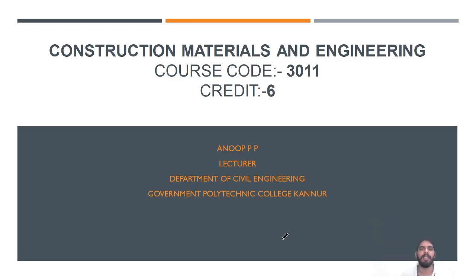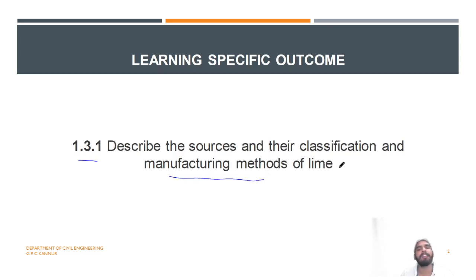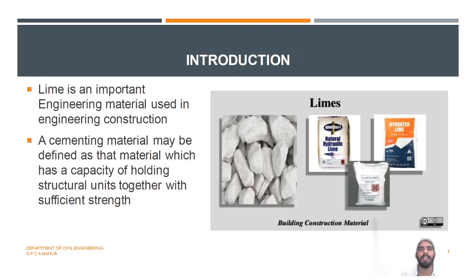Hi students, welcome to the new class on Construction Materials and Engineering. Today we will discuss about a new topic called lime. As per the learning specific outcome 1.3.1, we will discuss about the sources, classification, and manufacturing methods of lime. This can be asked for 2 marks as well as for 6 or 9 marks in your examination. So we are going to the introduction part of lime.